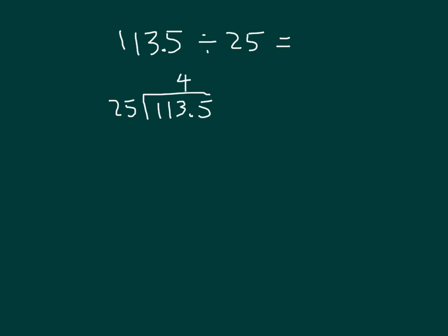It goes in 4 whole times. Notice again where it is that I'm placing that digit for that quotient because it's right in the ones place. That's what I was working with right there. 4 times 25 is 100. 113 minus 100 is 13.